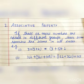Property number 2: Associative property. If three or more numbers are added in different groups, their sum remains the same in all cases.